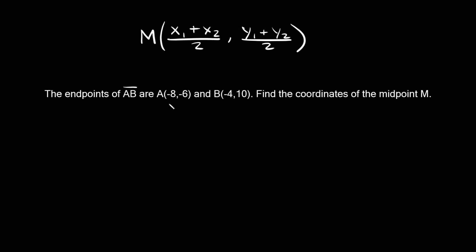We're going to label these coordinates as x1, y1 and we'll label these as x2, y2. Just to be clear, it doesn't matter which one you label as x1 and x2 — we could label either point first. It doesn't matter, but it's just a little easier to keep it in order. So let's plug this into our midpoint formula.